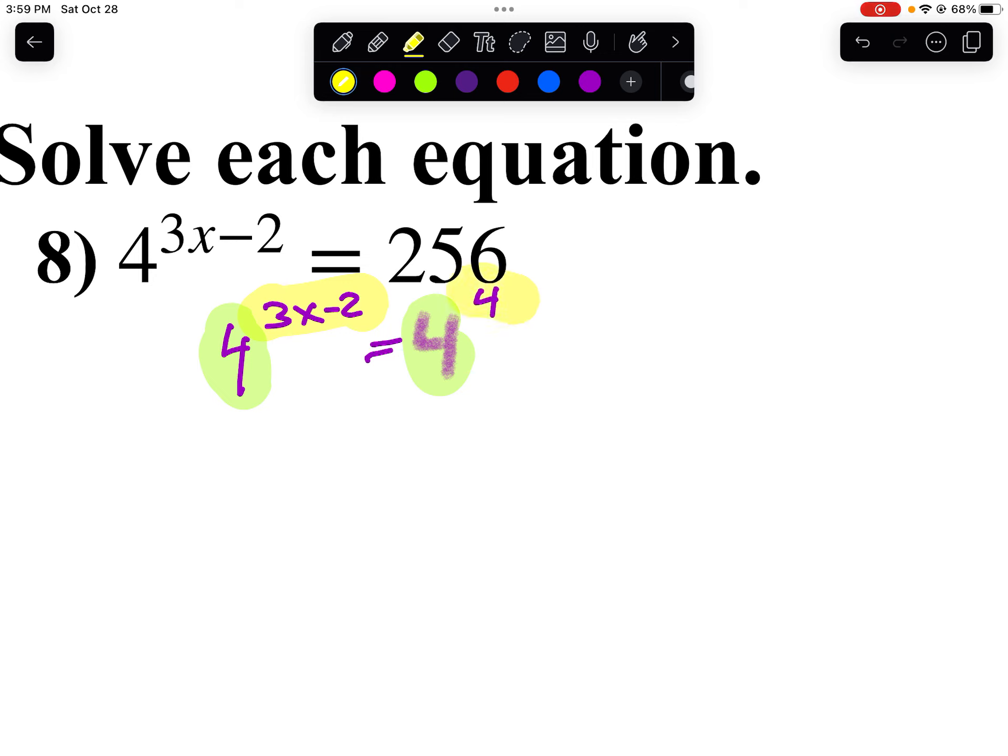So 3x minus 2 equals 4. I'll solve that problem like I normally do. I'll add 2 to both sides. 3x equals 6. I'll divide by 3. And x equals 2. And there is my solution.